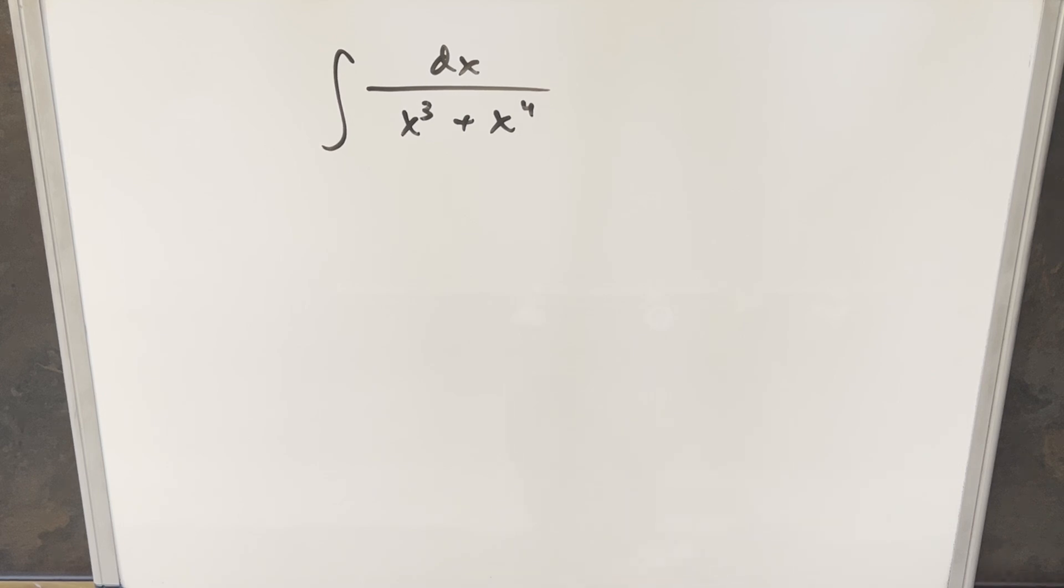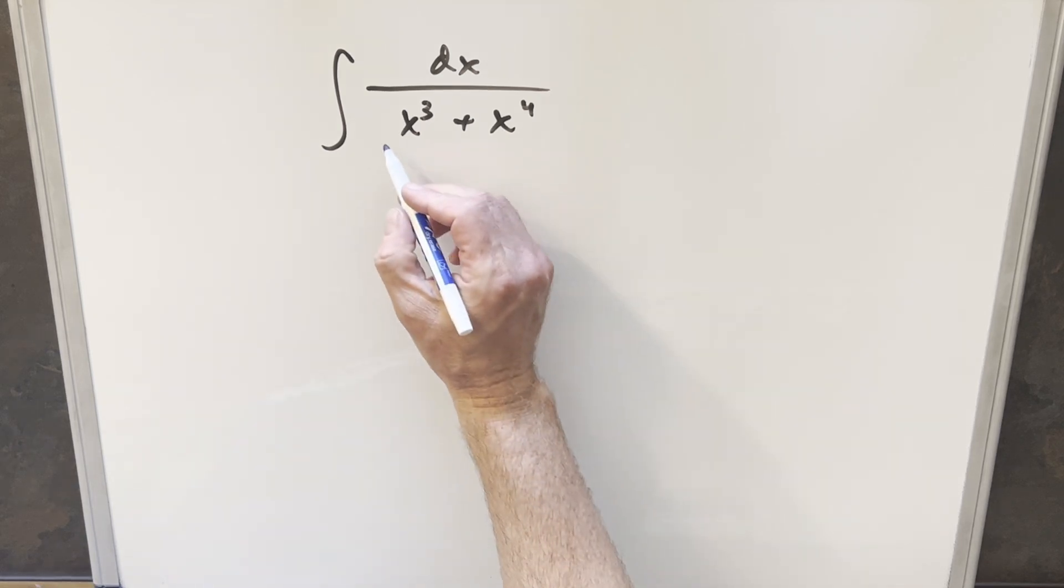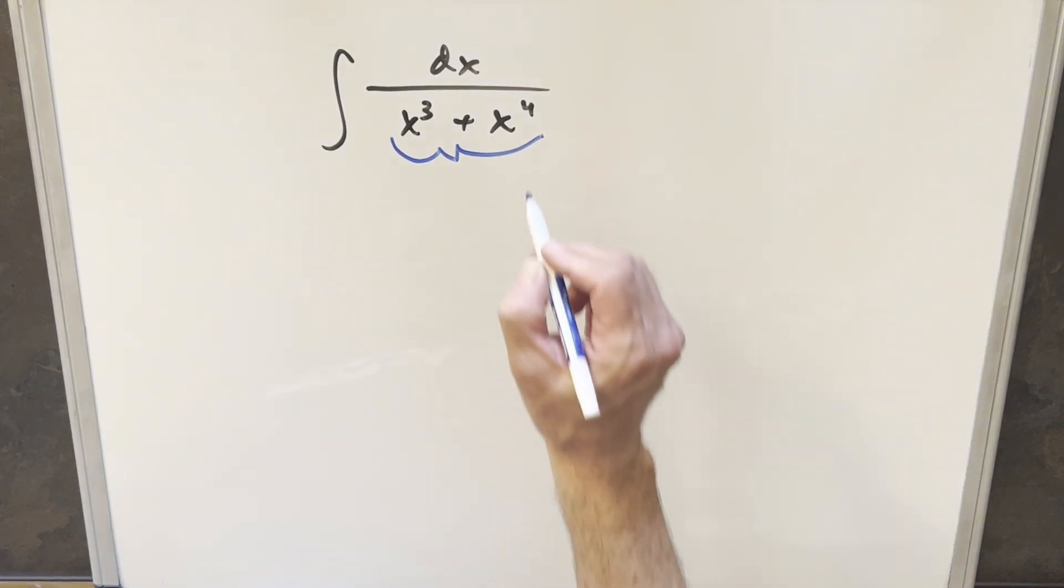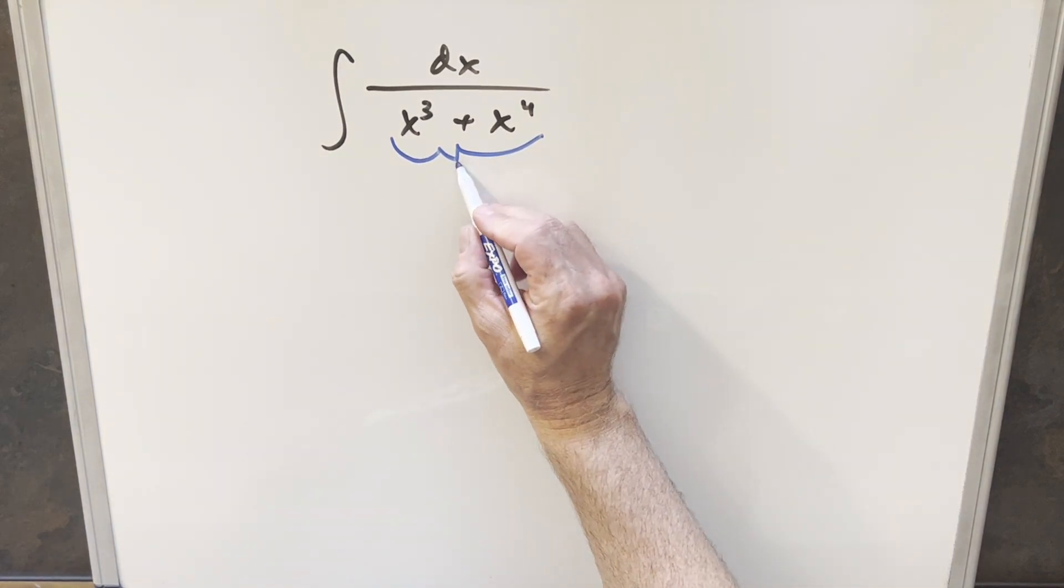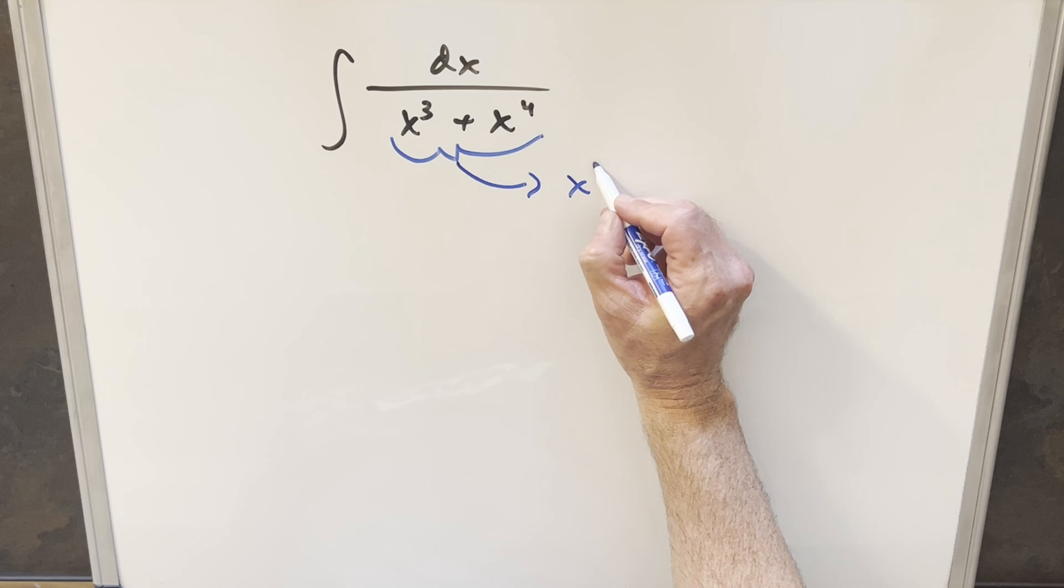Okay, we've written another integral. We've got the integral of 1 over x cubed plus x to the 4th dx. To get started with this, what we want to do in the denominator here, I'm going to want to factor out either x cubed or x to the 4th. I think you could probably do it either way, but my preference, I think what I want to do is factor out the x to the 4th.